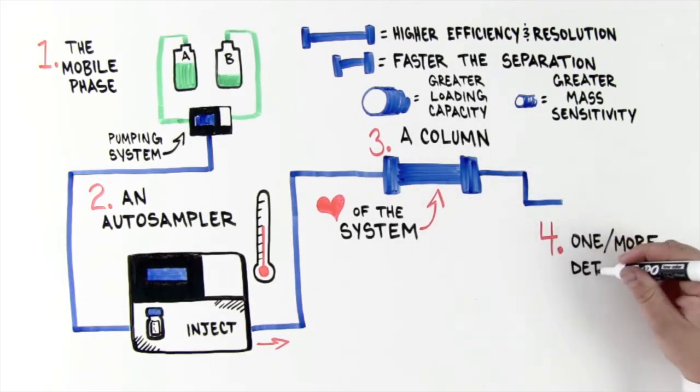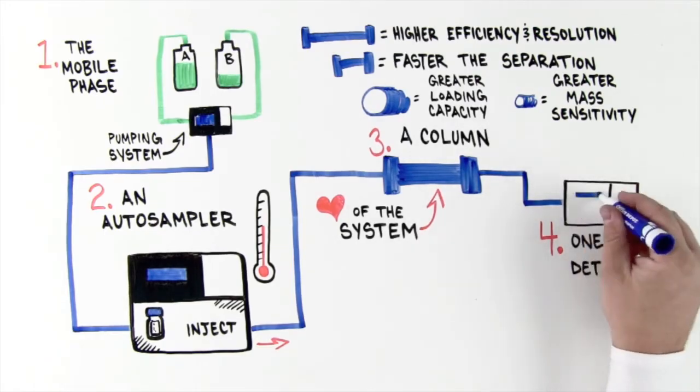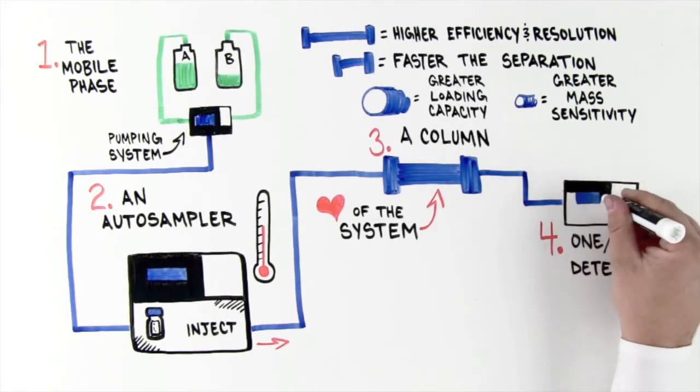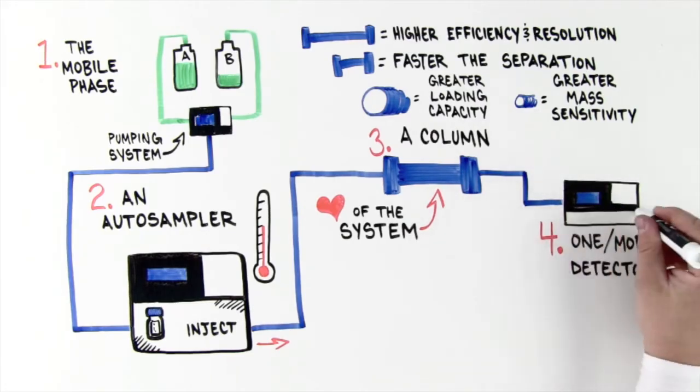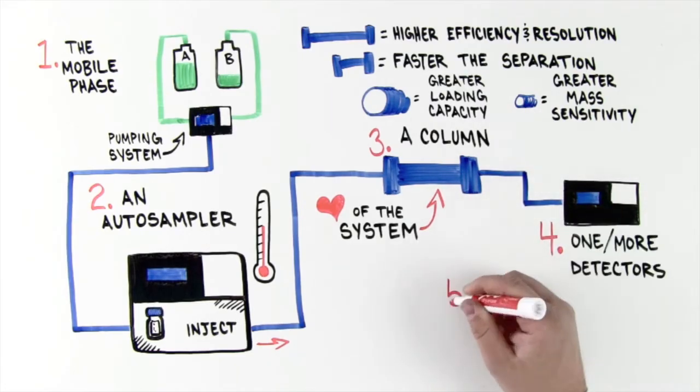One or more detectors in series. The detector receives the result of the sample separation from the column and monitors a physical property which changes as the sample elutes.